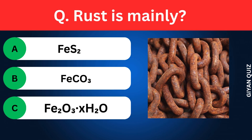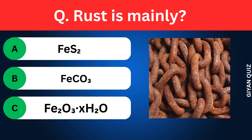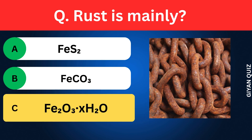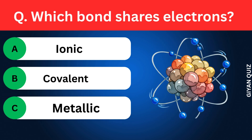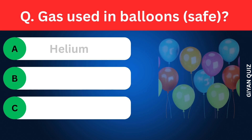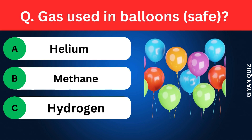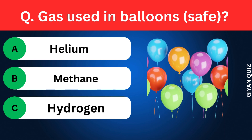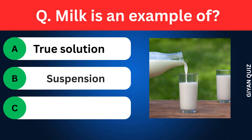Rust is mainly? Options: Iron pyrite, Ferrous carbonate, Hydrated ferric oxide. Correct answer: hydrated ferric oxide. Which bond shares electrons? Options: Ionic, Covalent, Metallic. Correct answer: covalent. Which gas is used in balloons? Options: Helium, Methane, Hydrogen. Correct answer: helium.